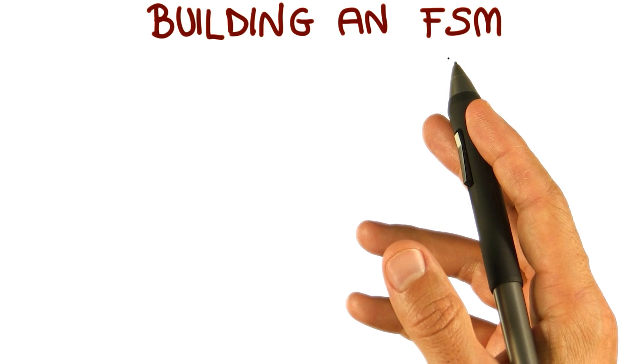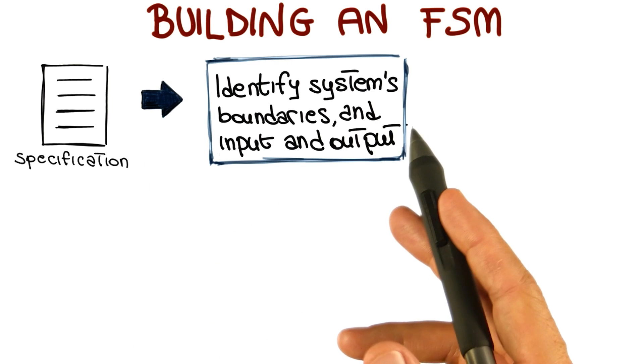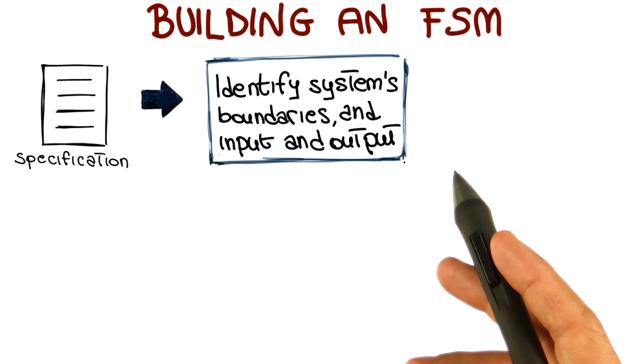So how do we build such a finite state machine starting from a specification? The first thing we need to do is identify the system's boundaries, and the input and output to the system.